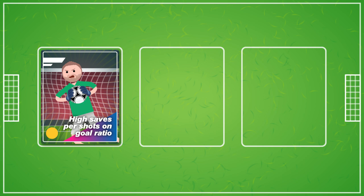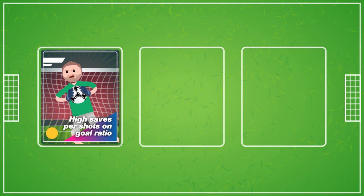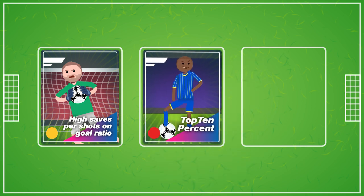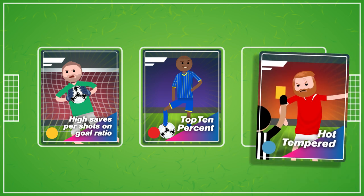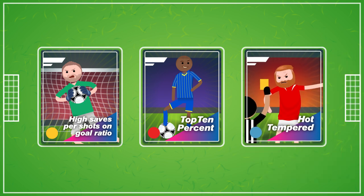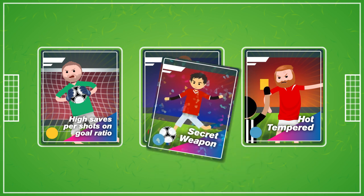When you drafted your goalie, you looked for one with a high saves per shots on goal ratio. And when you named your team captain, you made sure their successful pass rate and shots on goal stats were in the top 10% of all the other players. You made sure to steer clear of hot-tempered players who have high foul counts. Plus, your secret weapon is your ace penalty kicker.